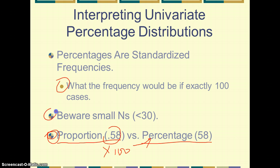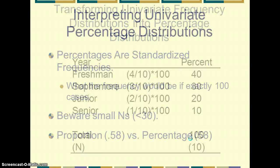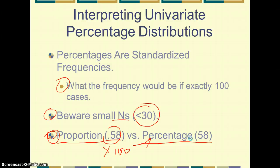Beware of small sample sizes, especially less than 30. In our sample we only had 10, which is extremely small. The reason is that results from calculations tend to be more susceptible to bias or skewing — being pulled in a way that isn't completely representative of the sample or the population it was drawn from — when you have sample sizes less than 30. The larger the sample size, the larger the n, usually the better.